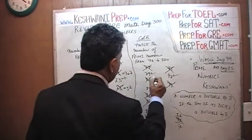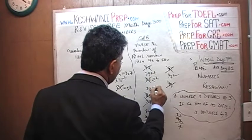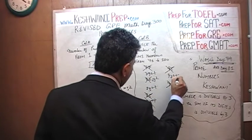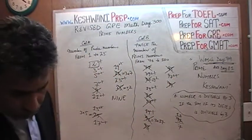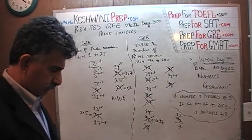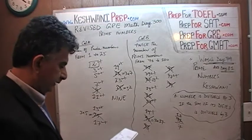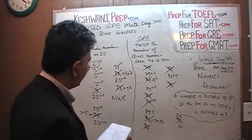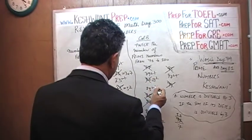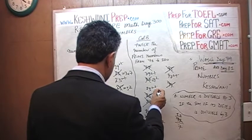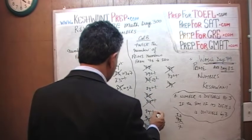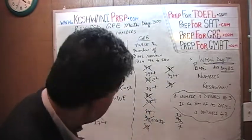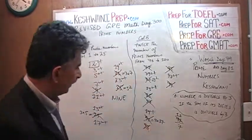So how many prime numbers do we have in column B? Counting: 1, 2, 3, 4, and 5. Wait — 79, 83, 89, and 97. How did I count 5? I shouldn't have counted 87 — even though it was crossed out, I wasn't paying attention.